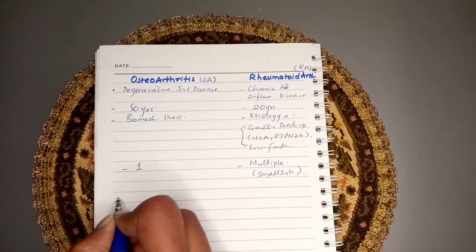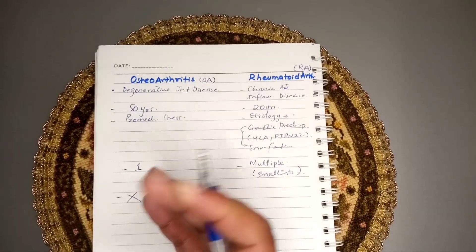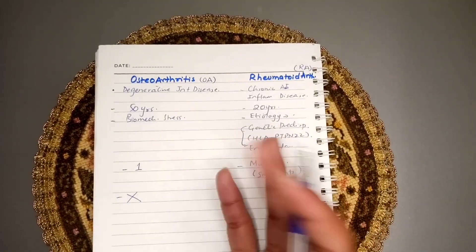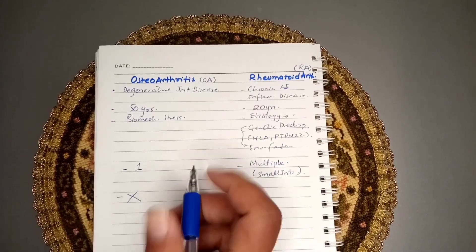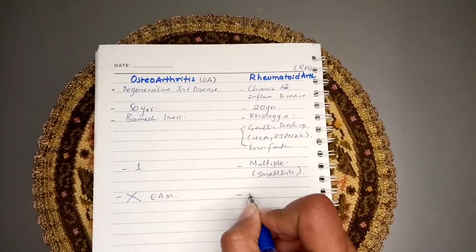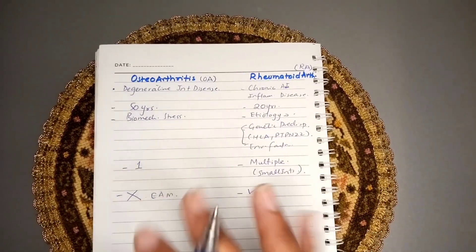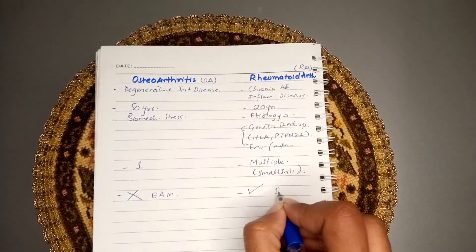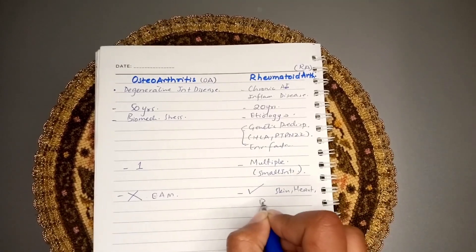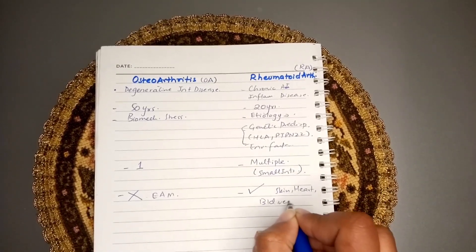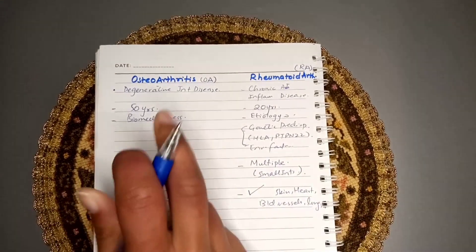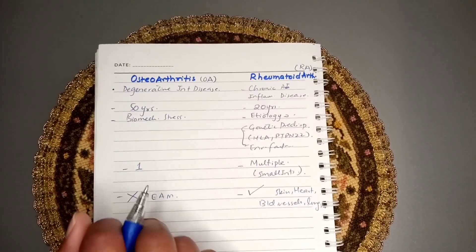In osteoarthritis, there is no extra-articular manifestation such as fatigue. In rheumatoid arthritis, however, there are extra-articular lesions in the skin, the heart, blood vessels, and the lungs.